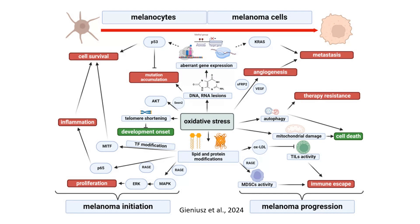Oxidative stress activates inflammatory pathways including NFKB and IRAS, which fuel cell proliferation through the ERK/MAPK pathway. MITF, a transcription factor critical for melanocyte survival, is also modified, further contributing to melanoma initiation. As melanoma progresses, oxidative stress induces angiogenesis — the formation of new blood vessels through factors like VEGF — ensuring a steady supply of nutrients to the tumor. Mutations in oncogenes like KRAS, combined with oxidative stress, enable melanoma cells to resist therapies and metastasize to distant tissues.